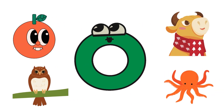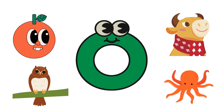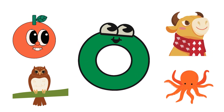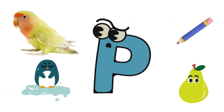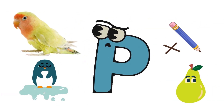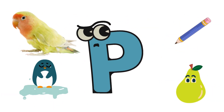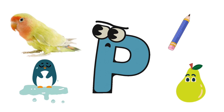O for orange, ox, owl, octopus. P for parrot, pencil, penguin, pear.